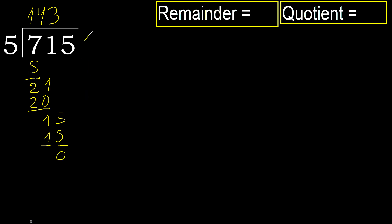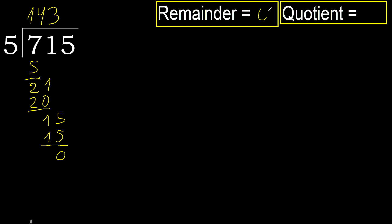Next, that is not a number, therefore finish it. OK. 715 divided by 5 is 143.